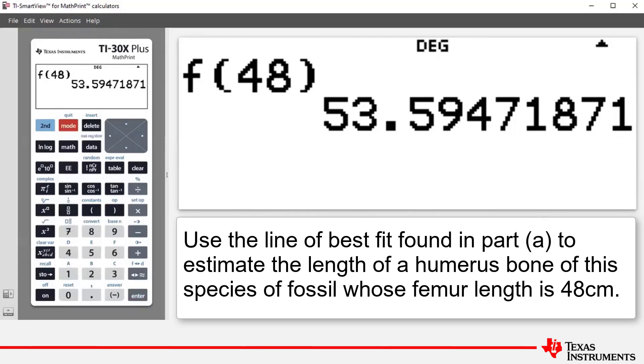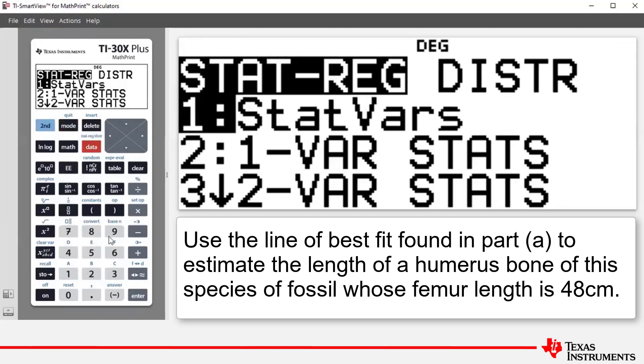We've shown you one way how to do part B. The calculator has another way of doing part B. And this time we're going to use two variable stats. So if we press second data and then press 3 for two variable stats.